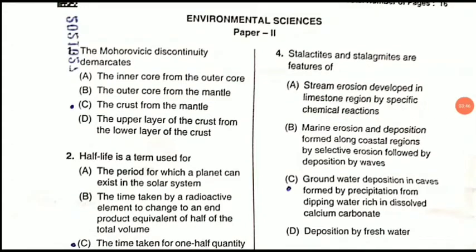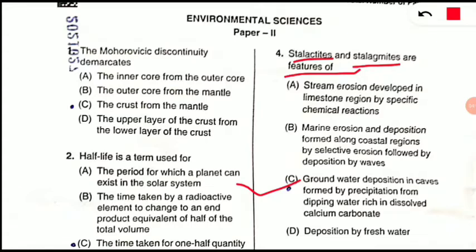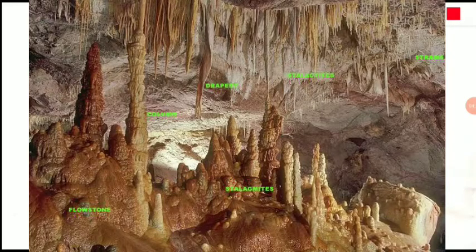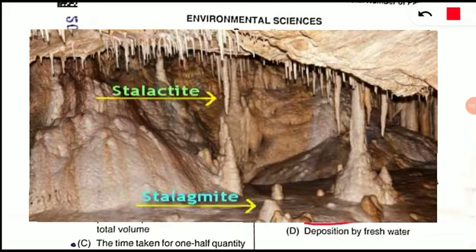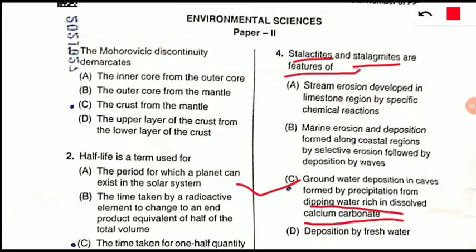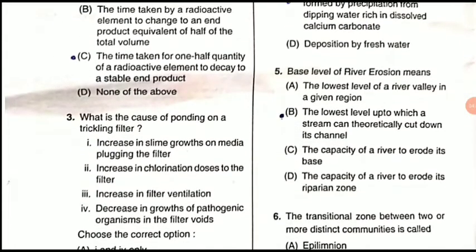Question 4: Stalactites and stalagmites are features of what? This term may be new for many students. The correct option is C — groundwater deposition in caves, formed by precipitation from dripping water releasing dissolved calcium carbonate. As you can see in the picture, inside caves these formations come from calcium carbonate deposits from dripping water — stalactites and stalagmites.